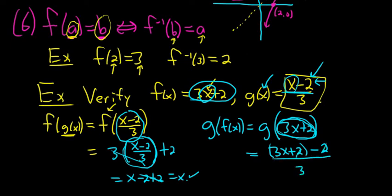The 2's cancel. So we get 3x/3. So we get x. So that's it. So in fact, they're inverses of each other. The verification is complete.